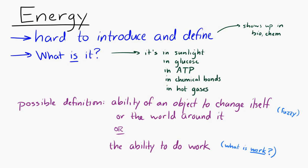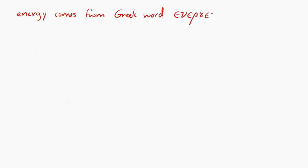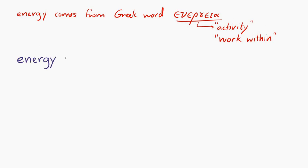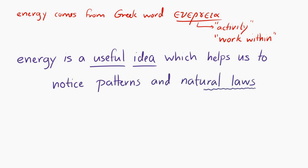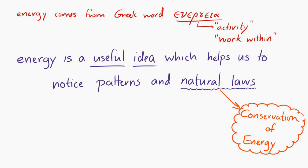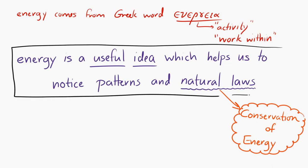We could try to go to the root of the word — energy comes from a Greek root, energeia, which means activity or work within. That doesn't really help that much. But at the end of the day, what energy is, is a useful idea. It's a useful idea which helps us to notice patterns and natural laws. In particular, the natural law that energy helps us use is the conservation of energy, which is something you may have encountered before and something we will definitely use later on.